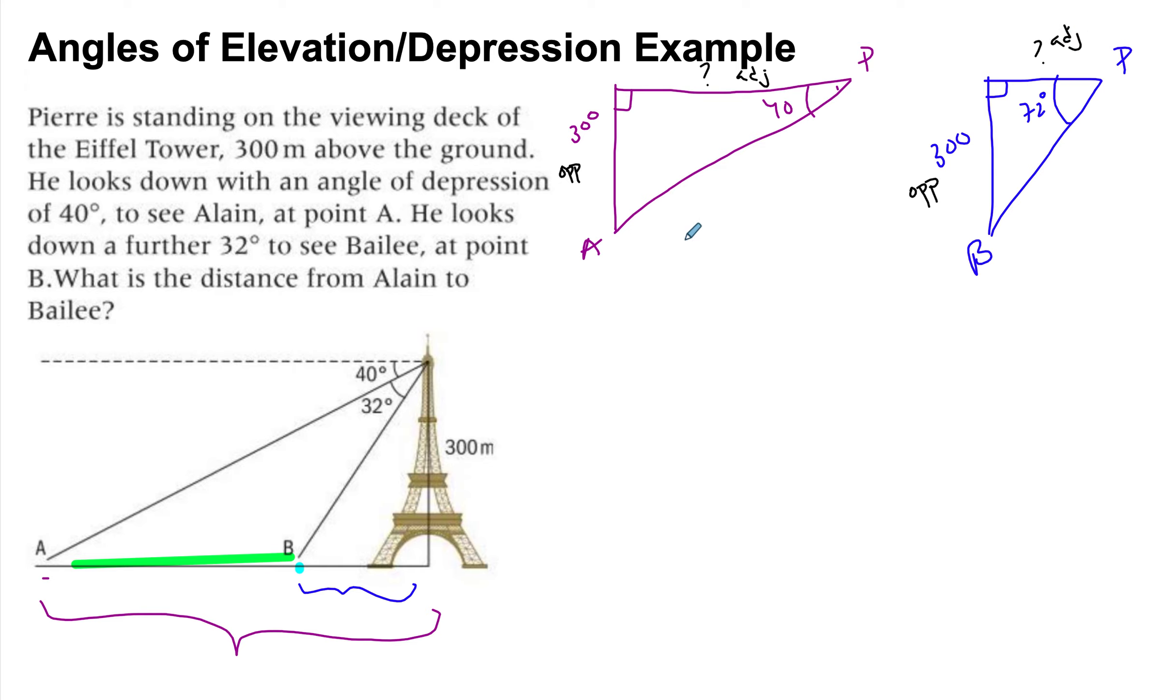And hence, I can use a tan. So you should know how to do this. So this is tan 40, opposite over adjacent.